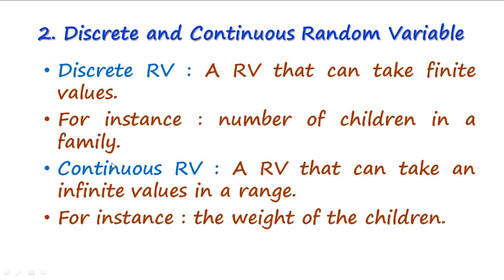A random variable can be distinguished between discrete and continuous types. If a random variable can take some finite values it is called a discrete random variable — for example, the number of children in a family, which is a finite number that can be counted easily. On the other hand, if the random variable can take an infinite sequence of values in a range, it is called a continuous random variable. For instance, the weight of children can be 15.1, 15.2, 15.11, 15.15 — an uncountable sequence of values between 15 and 16 pounds — so weight is a continuous random variable.